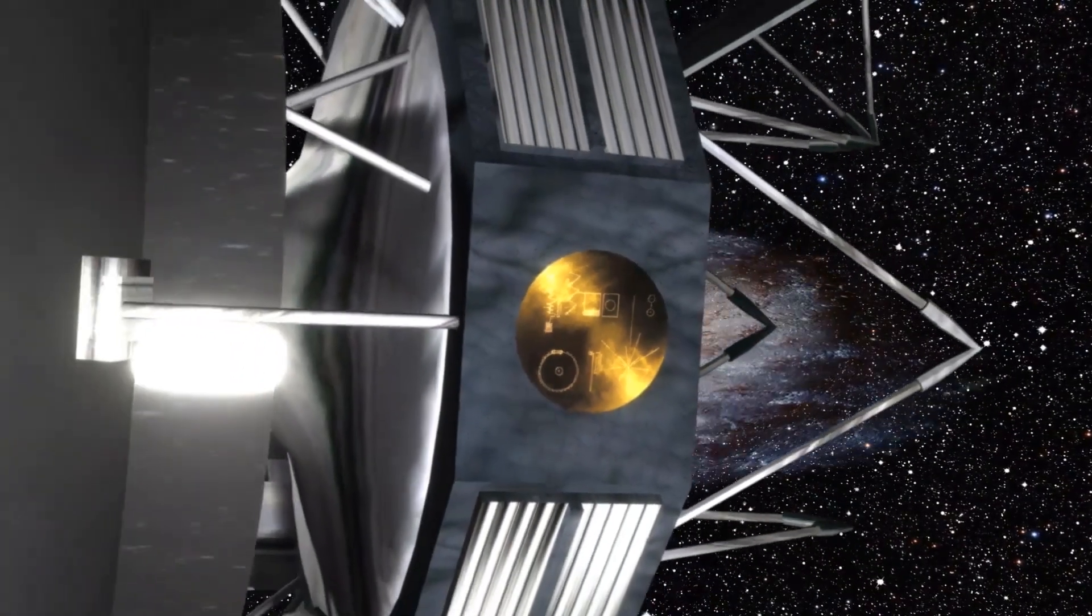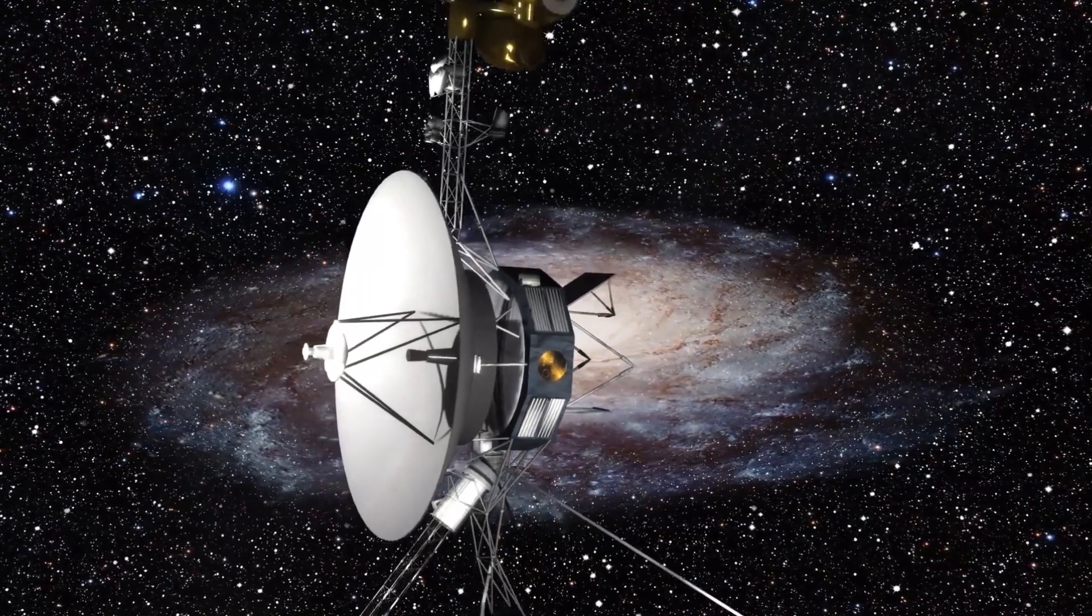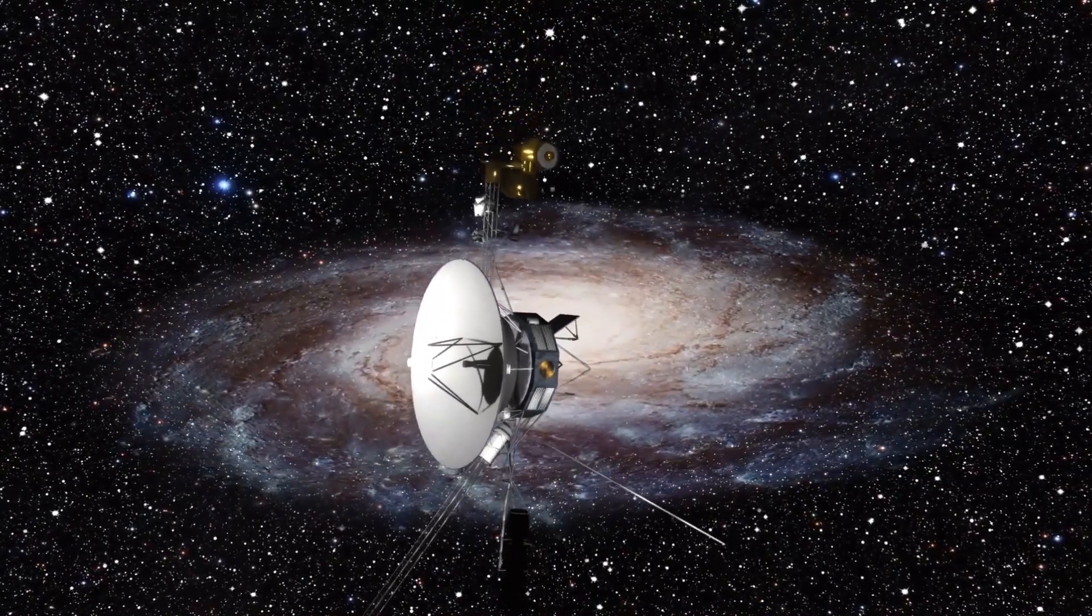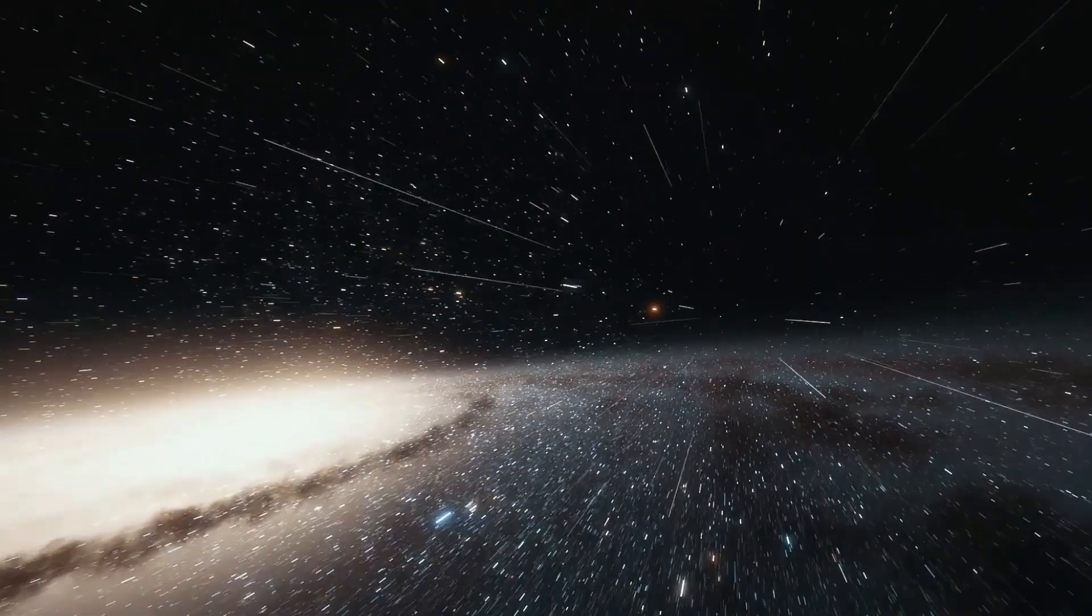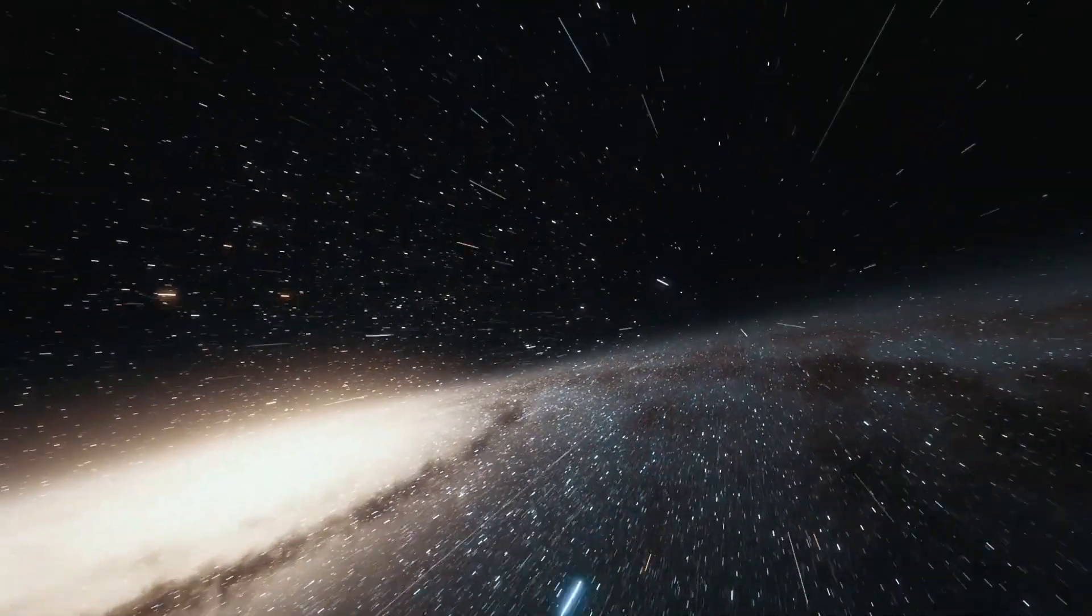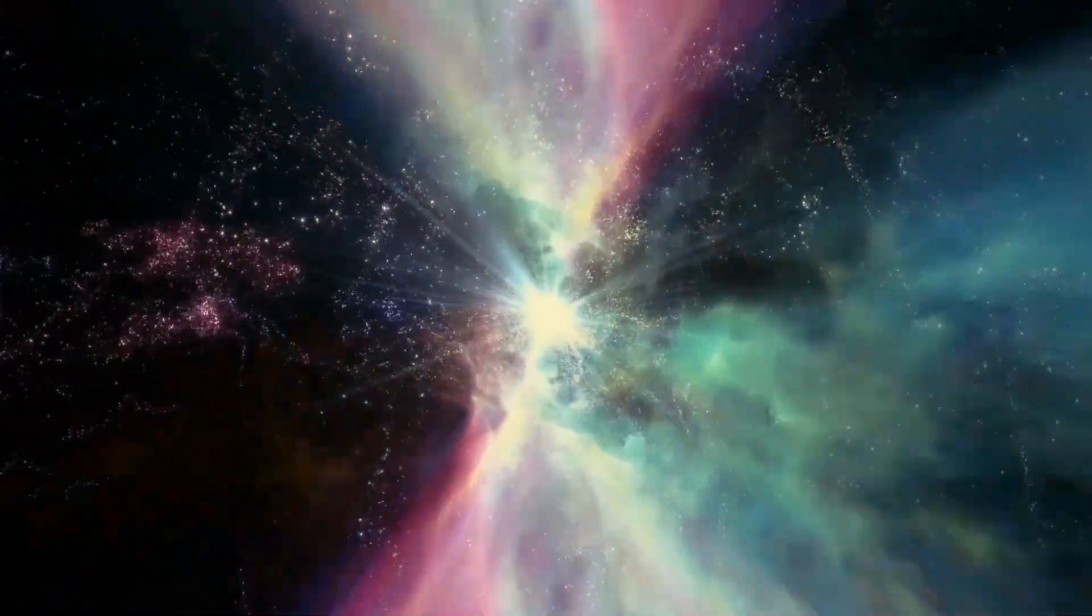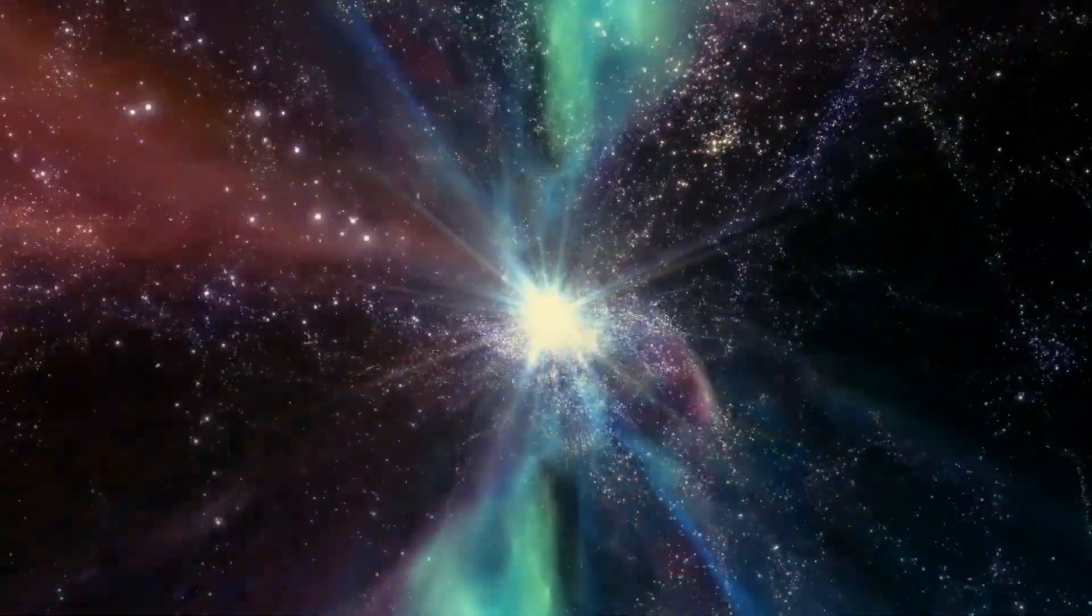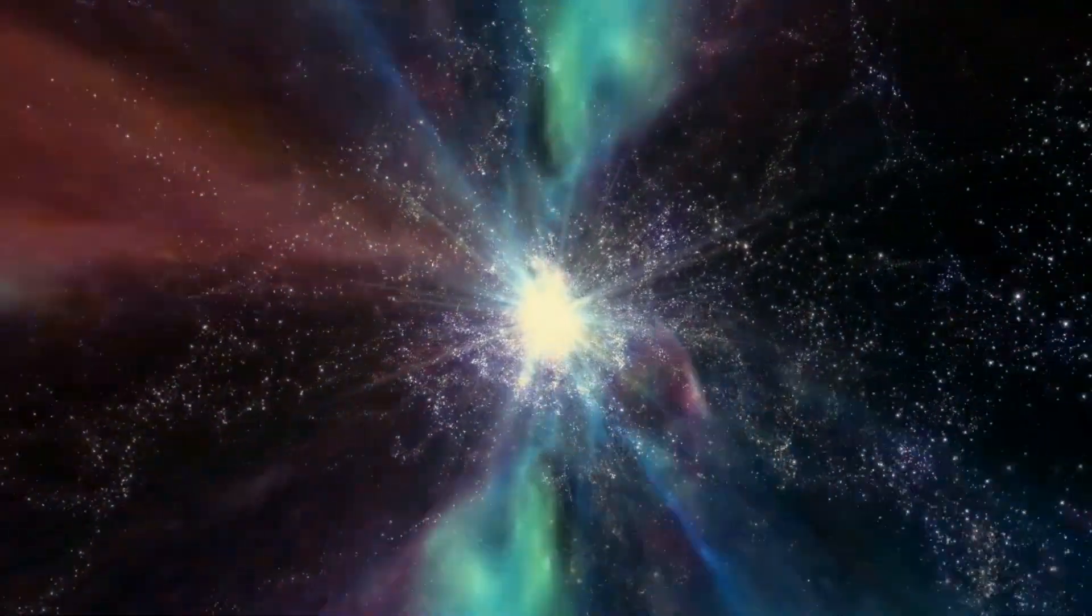The legendary Voyager probes have been charting a course through deep space for almost half a century now, so it comes as no surprise that the crafts are finally starting to show their age. Recently, it was announced that Voyager 1 has run into some problems. While the interstellar explorer is operating normally, receiving and executing commands from Earth, along with gathering and returning science data, readouts from the probe's attitude, articulation, and control system don't reflect what's actually happening on board.